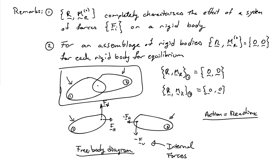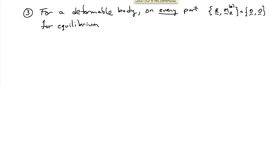When we have assemblages of rigid bodies, the resultant force and resultant moment must equal zero for each rigid body for the entire system to be in equilibrium. Later in this course, we will deal with deformable bodies. In a deformable body, the condition is similar but requires that for every part of the body, the resultant force and resultant moment equal zero for equilibrium of the entire system.